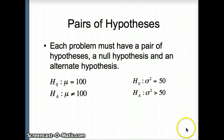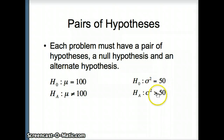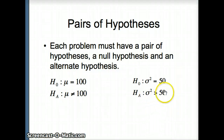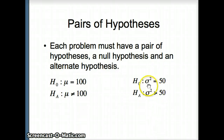Here is a potential pair of hypotheses for the variance. We could say H0 is sigma squared equals 50 versus Ha sigma squared is greater than 50. This would be a one-tailed test. The only way we're going to reject H0 is if s squared is a whole lot bigger than 50, which suggests the underlying variance was not 50.